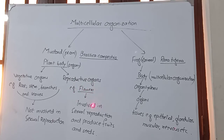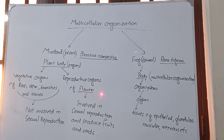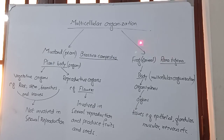The reproductive organs — examples are flowers. These flowers are involved in sexual reproduction and produce fruits and seeds, because they produce the gametes: the sperms and the eggs. These later fuse together to make the zygote, and then repeated division takes place in the zygote, leading to the formation of the embryo, which then develops into a new individual like its parent.